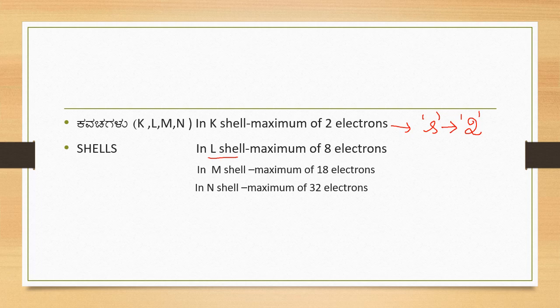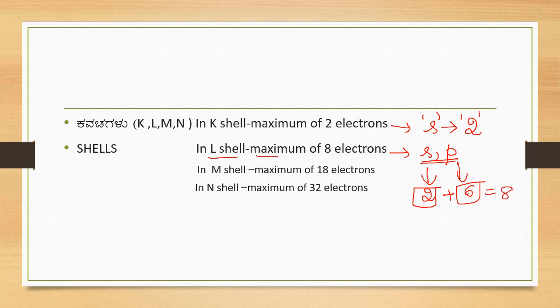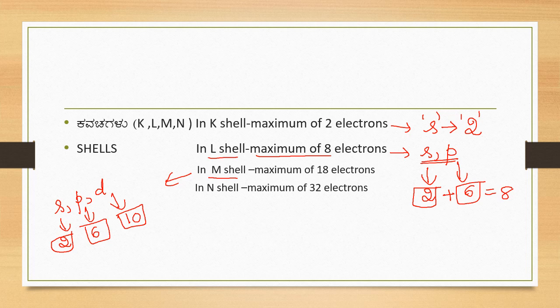In L shell, S sub-shell holds a maximum of two electrons and P orbital holds six electrons. Therefore a total of two plus six — eight electrons can accommodate in the second shell. In M shell there are three sub-shells: S, P, D. S holds two, P holds six, D holds ten electrons. Total 2 plus 6 plus 10 equals 18. So maximum capacity of M shell is 18.